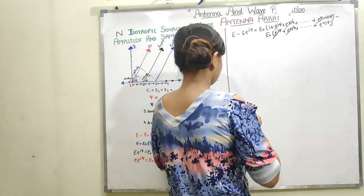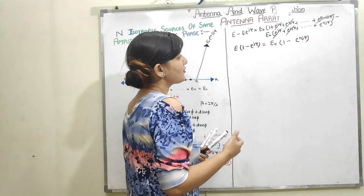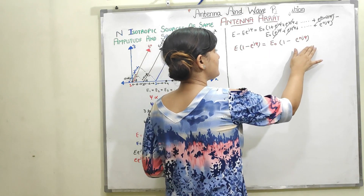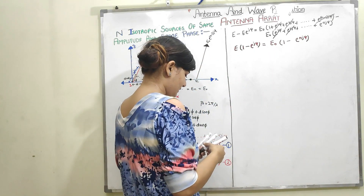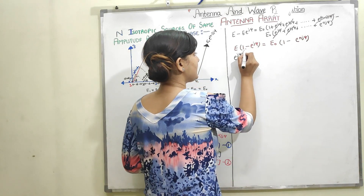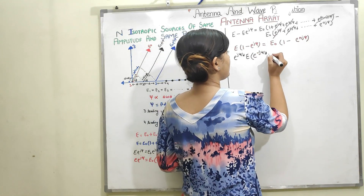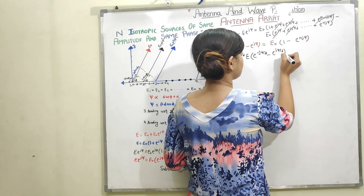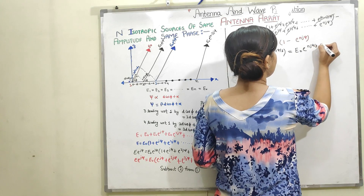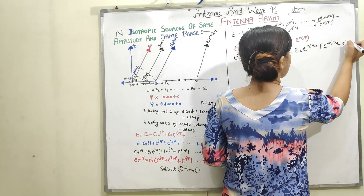For further simplification, I take e^(j·N·psi/2) common from one term and e^(j·psi/2) common from the other. From the first group, taking e^(j·psi/2) common leaves e^(-j·psi/2) and e^(+j·psi/2). From the second group, taking e^(j·N·psi/2) common leaves e^(-j·N·psi/2) minus e^(+j·N·psi/2).